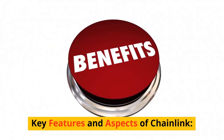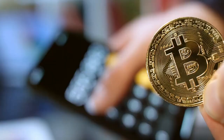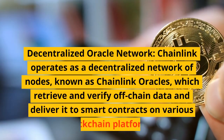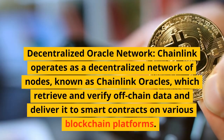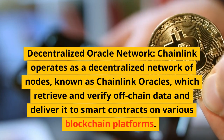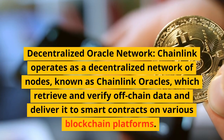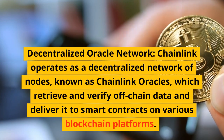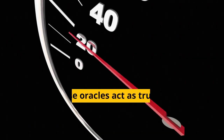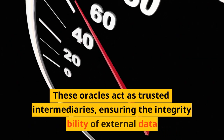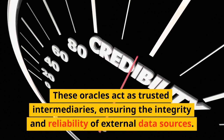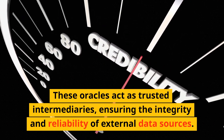Chainlink operates as a decentralized network of nodes, known as Chainlink Oracles, which retrieve and verify off-chain data and deliver it to smart contracts on various blockchain platforms. These oracles act as trusted intermediaries, ensuring the integrity and reliability of external data sources.